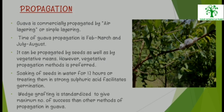Propagation: Guava is commercially propagated by air layering or simple layering. Time of Guava propagation is July to March and July to August. It can be propagated by seeds as well as vegetative means; however, vegetative means is preferred. Soaking of seeds in water for 12 hours or treating them in strong sulfuric acid facilitates germination. Vegetative grafting is standardized to give the maximum number of successes among other methods of propagation in Guava.